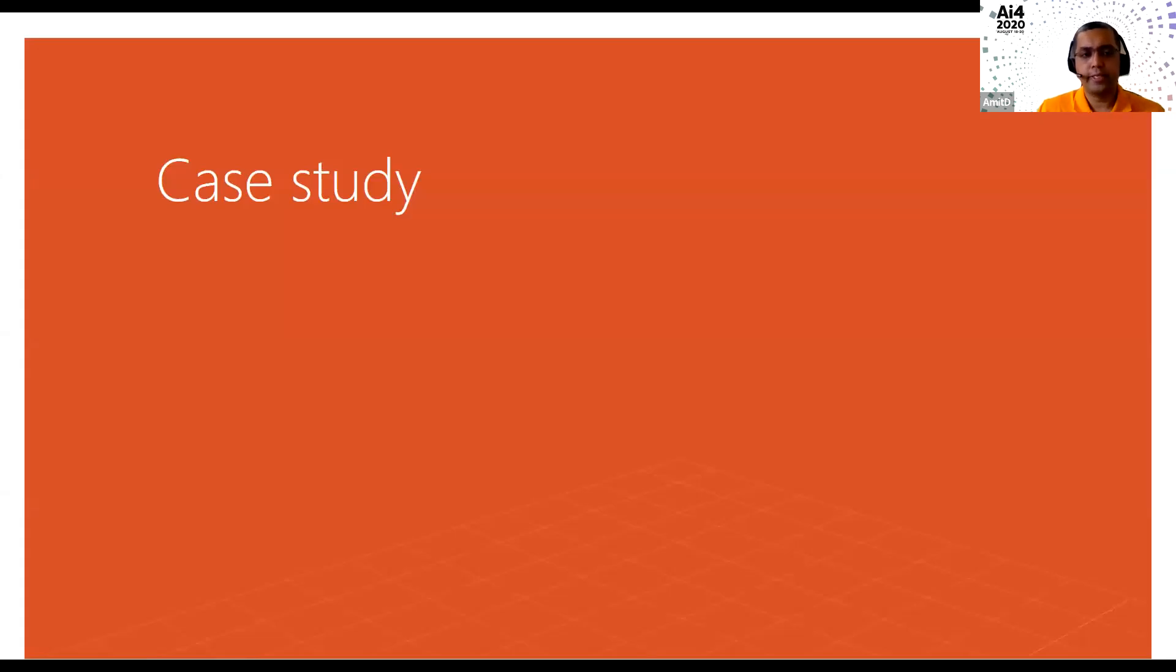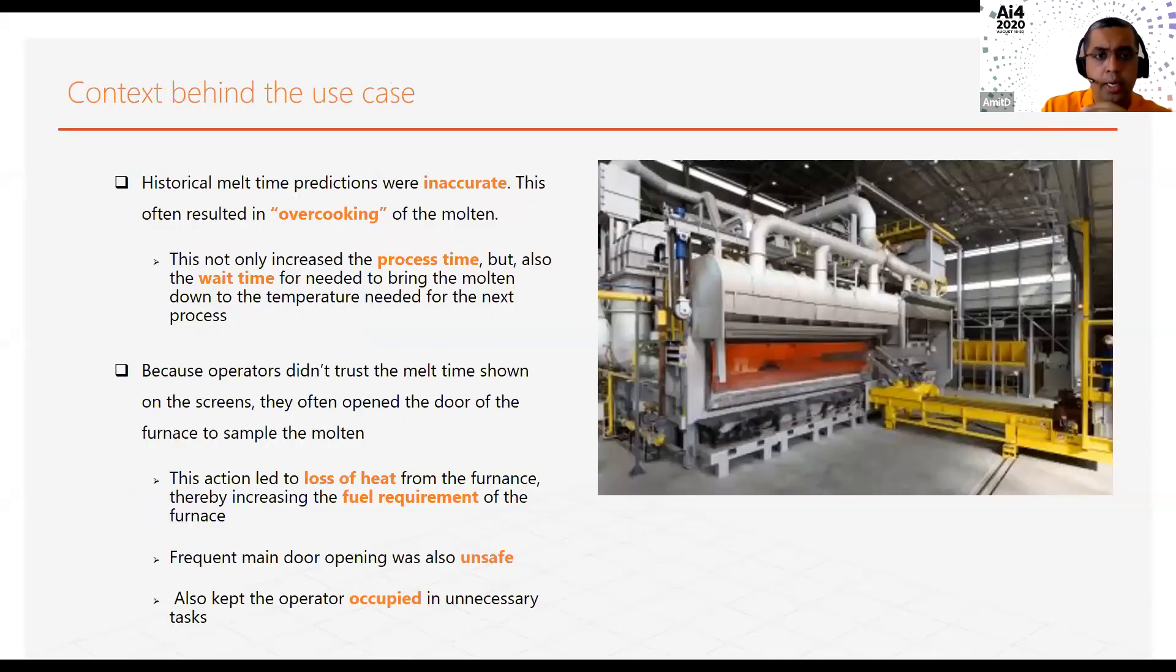I'm going to talk about one of the case studies where we have seen great success using machine learning in our operations. As I mentioned, we are a recycler of aluminum. We make aluminum coils by buying and recycling used aluminum. We have these large melters that take the used beverage cans or any other recycled aluminum material and melt it. For our process to have a good throughput,